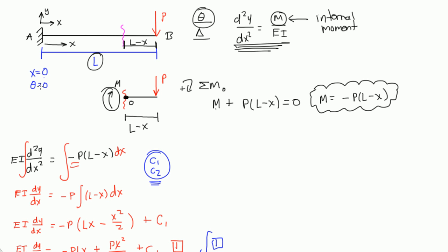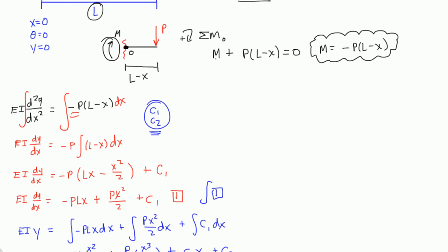You also know that at x equals 0, the deflection is equal to 0. Because there's a fixed end here and there's no settlement, so there's not going to be any deflections here at point A. So, let's actually use these conditions to figure out what C1 and C2 are.